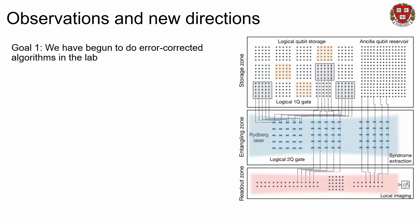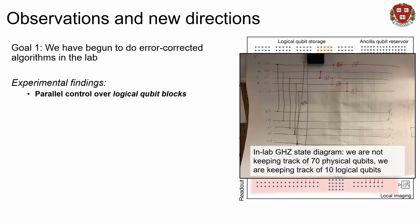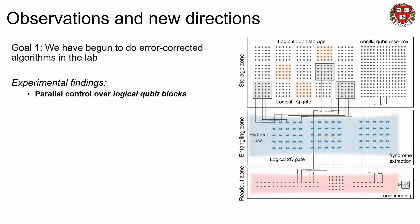In terms of observations from our first goal of doing error-corrected algorithms in the lab: one of the most central findings is the parallel control over logical qubit blocks. This is a university lab experiment operated by graduate students, and the types of circuits we draw for ourselves are not 70-physical-qubit circuits — we're keeping track of a simple 10-logical-qubit circuit. When we want to realize all these transversal gates between logical blocks in parallel, we just think about doing everything on the logical level. That was one really important experimental finding.